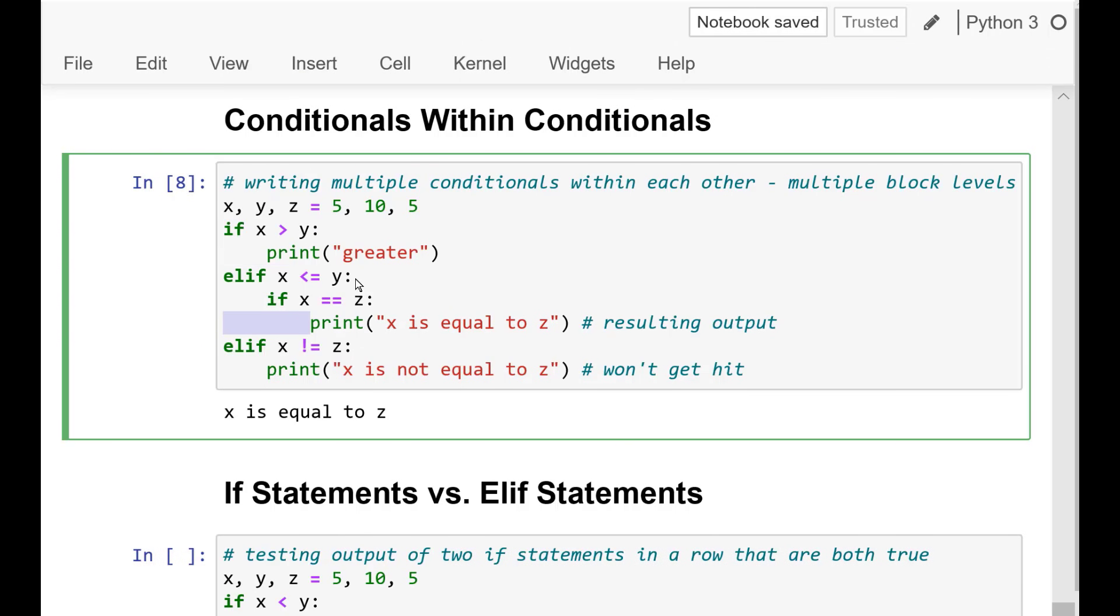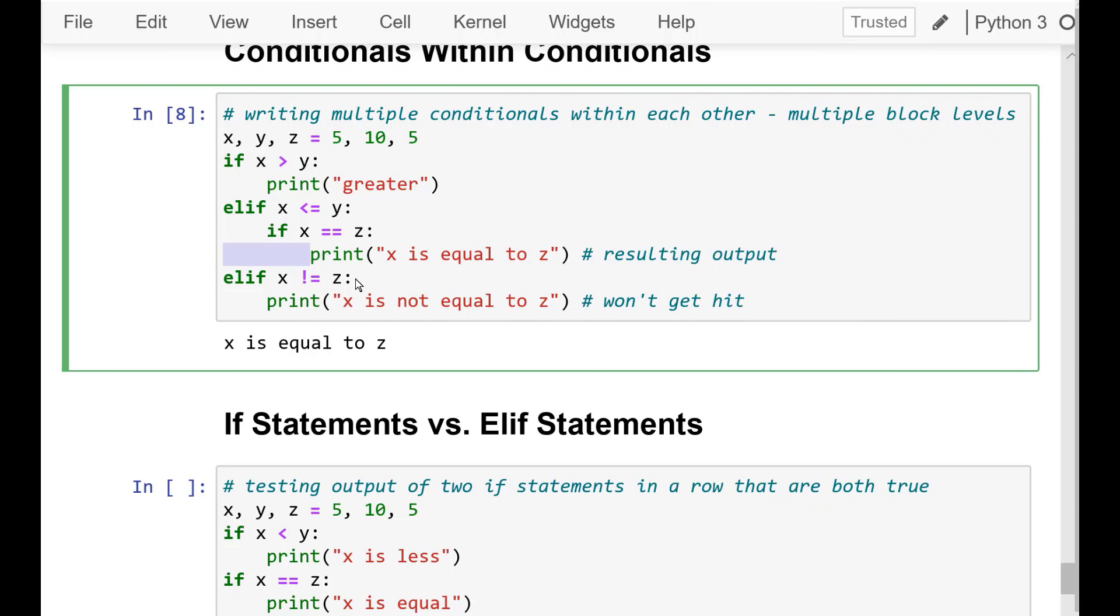Now inside of that block is another conditional statement. So it checks the first if statement, which returns true, and runs the block of code inside that.